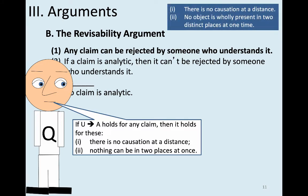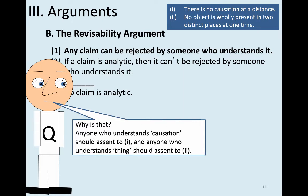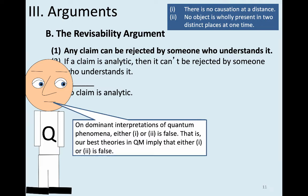Suppose it's true that anyone who understands causation should assent to claim one, and anyone who understands the notion of an object should assent to claim two. Well, then we're going to have to reject quantum mechanics. Because on dominant interpretations of quantum phenomena, at least one of these two claims is false — our best theories of quantum mechanics imply that either claim one is false or claim two is false.